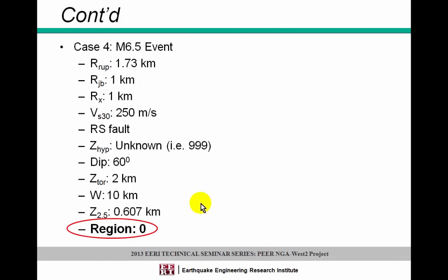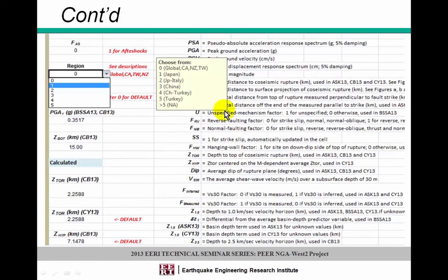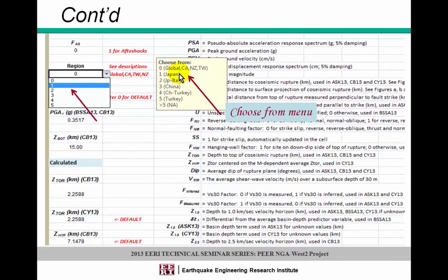A new and really important feature is: what if your site is not necessarily in California, Taiwan, New Zealand, or you don't want to set it global? For example, if your site is in Japan, in the input parameters section you have a region tag. Once you click it, you will see descriptions for the regions as a menu, and all you need to do is choose the tag for the specific region that applies.